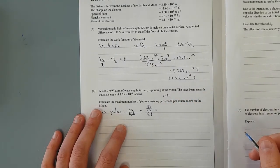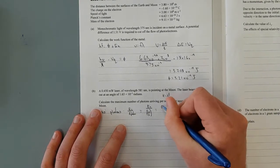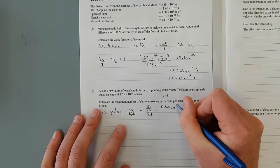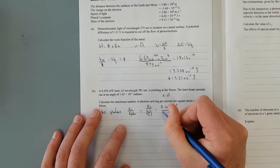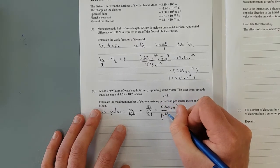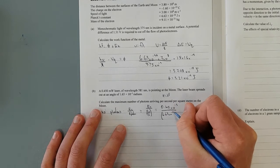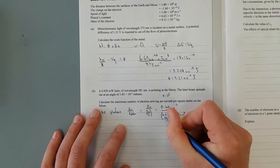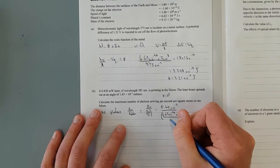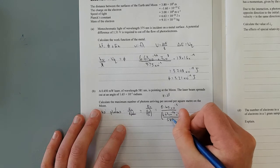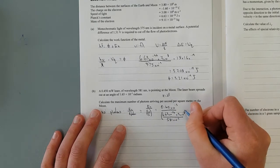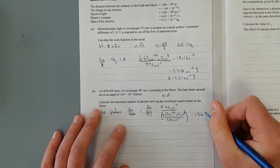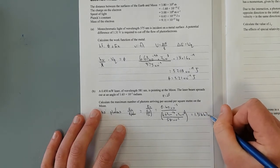That is equal to 0.45 times 10 to the negative 3, because it's milliwatts, divided by 6.63 times 10 to the negative 34, times 3 times 10 to the 8, divided by 581 times 10 to the negative 9, bracket. That equals 1.31447 times 10 to the 15.